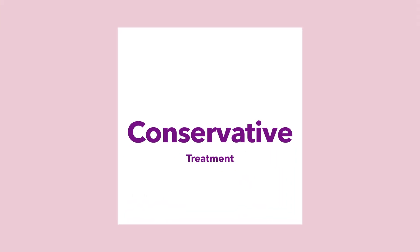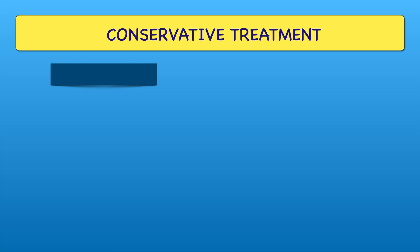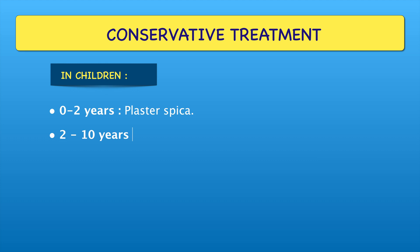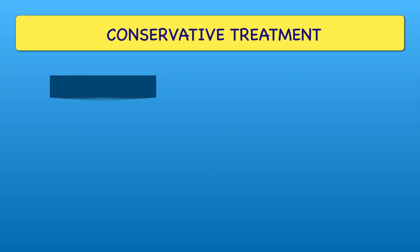Let's discuss conservative treatment. In children, treatment is selected by looking at the age group. Ages 0 to 2 years: plaster spica. Ages 2 to 10 years: split Russell traction. Ages 10 to 15 years: 90-90 degree femoral skeletal traction, hip spica, or both. Greater than 15 years: same as adults. In adults, the conservative treatment is traction and cast bracing.